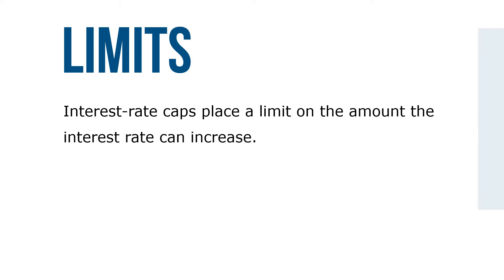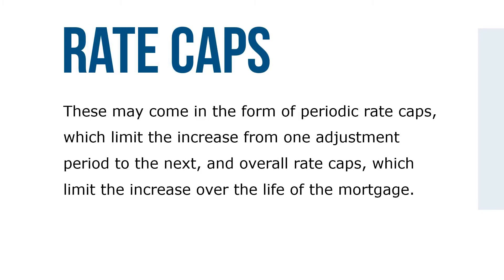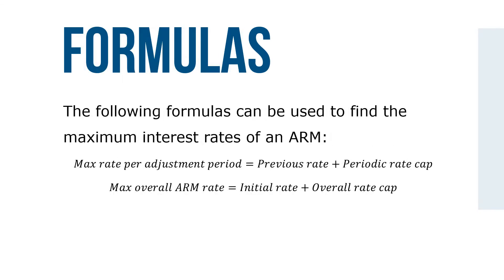Interest rate caps place a limit on the amount interest rates can increase. These may come in the form of periodic rate caps, which limit the increase from one adjustment period to the next, and overall rate caps, which limit an increase over the life of the mortgage. The following formulas can be used to find the maximum interest rates of an ARM: the max rate per adjustment period equals the previous rate plus the periodic rate cap, and the max overall ARM rate equals the initial rate plus the overall rate cap.